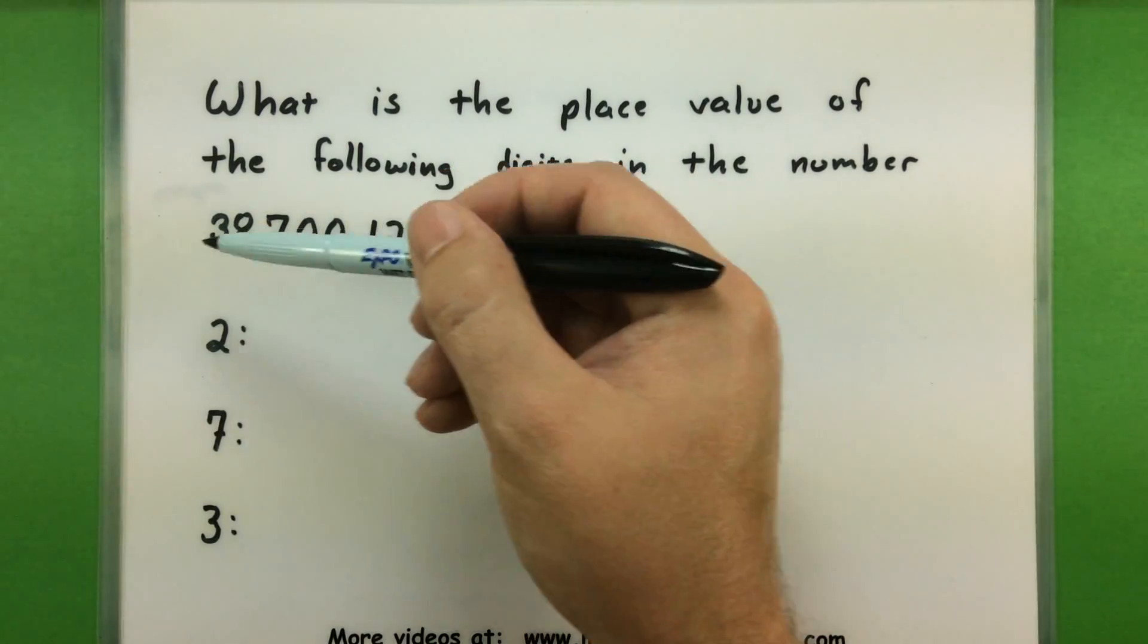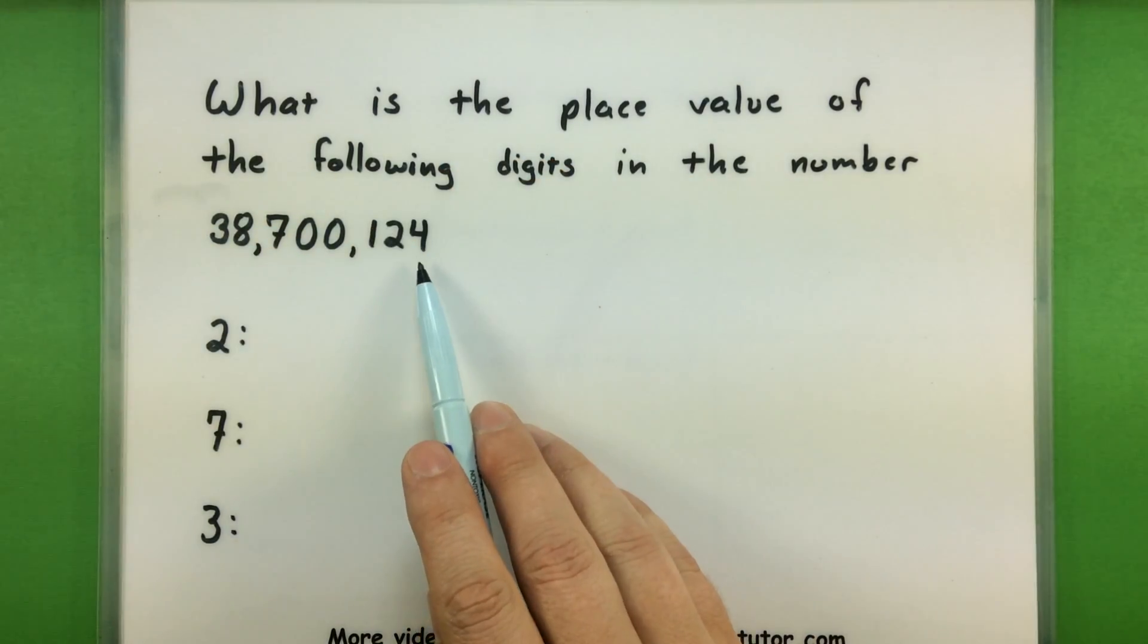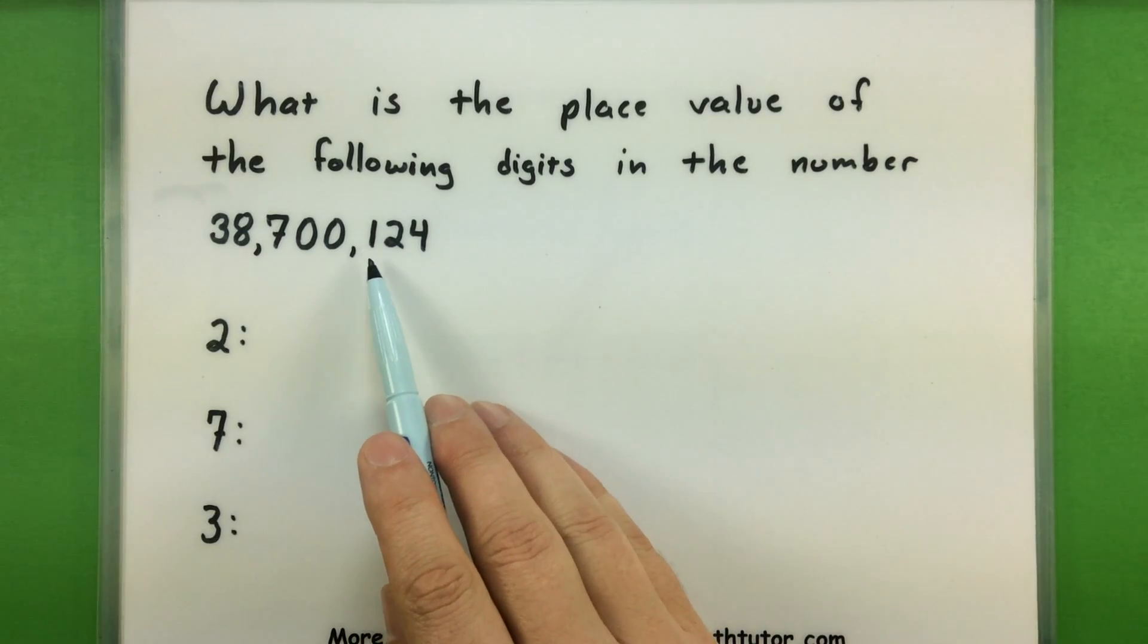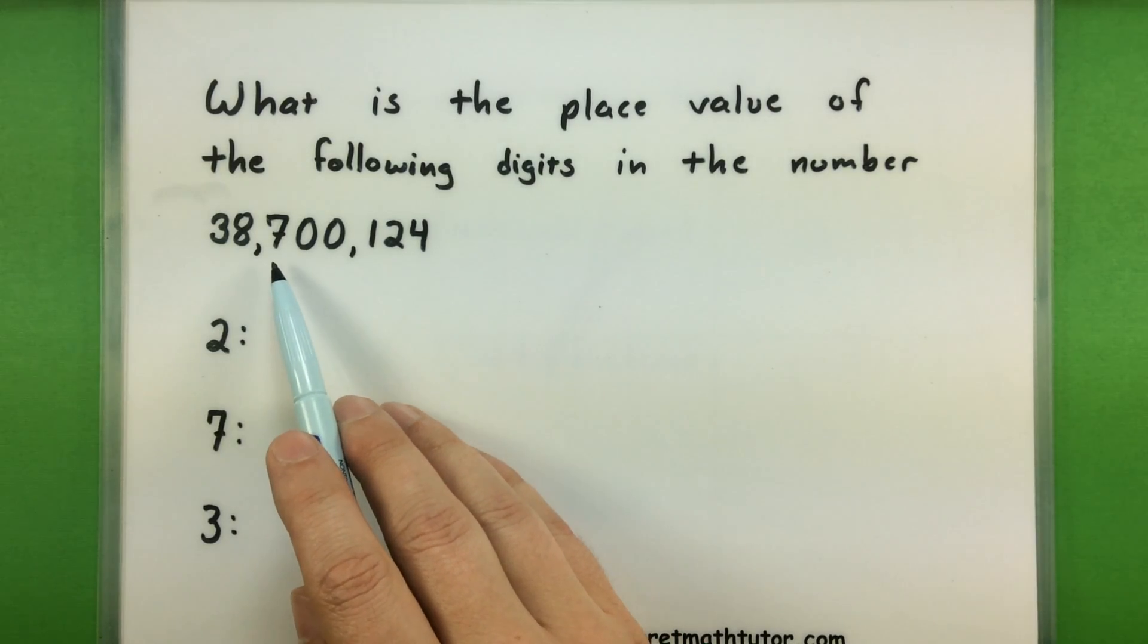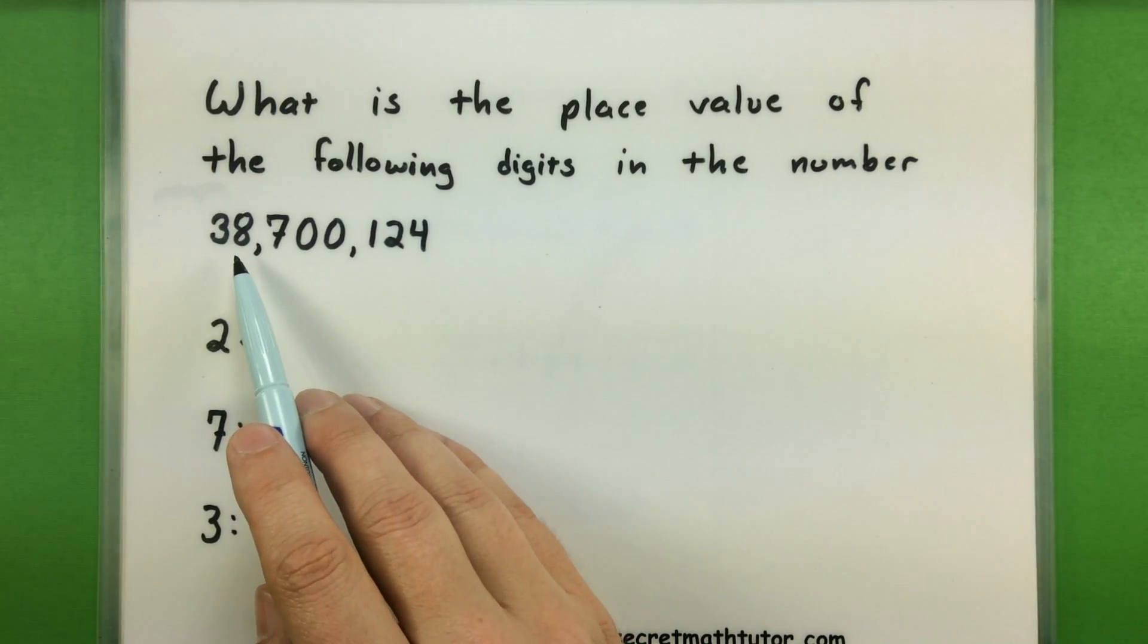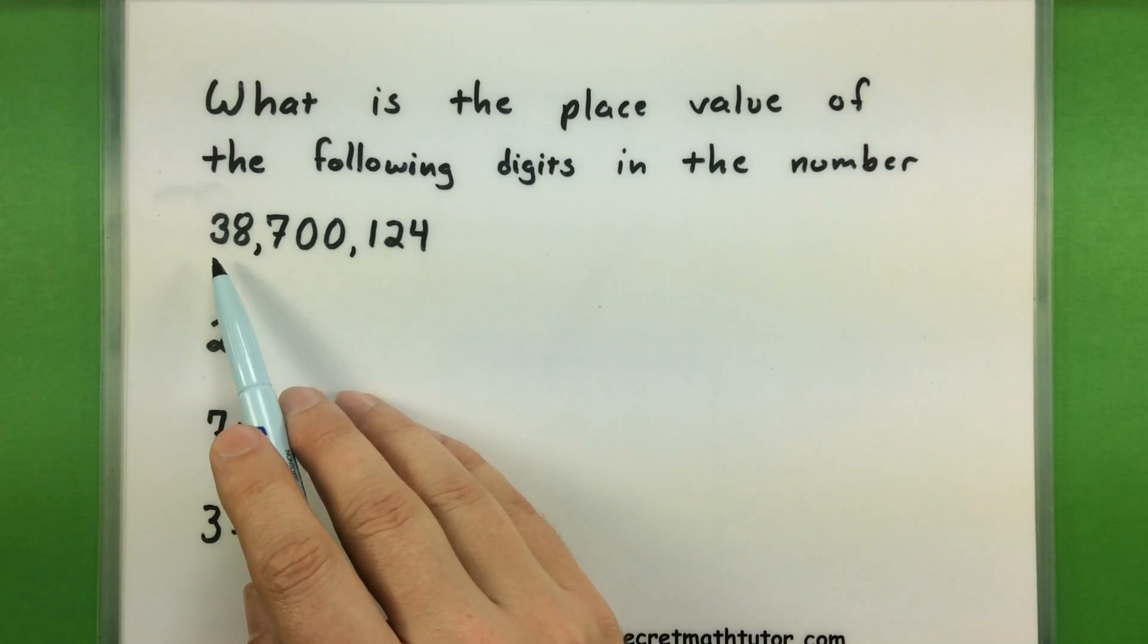I have the ones place, tens, hundreds, then I've bumped up to the thousands, ten thousands, hundred thousands, bump up a little bit more, now I'm in the millions, and finally the ten millions.